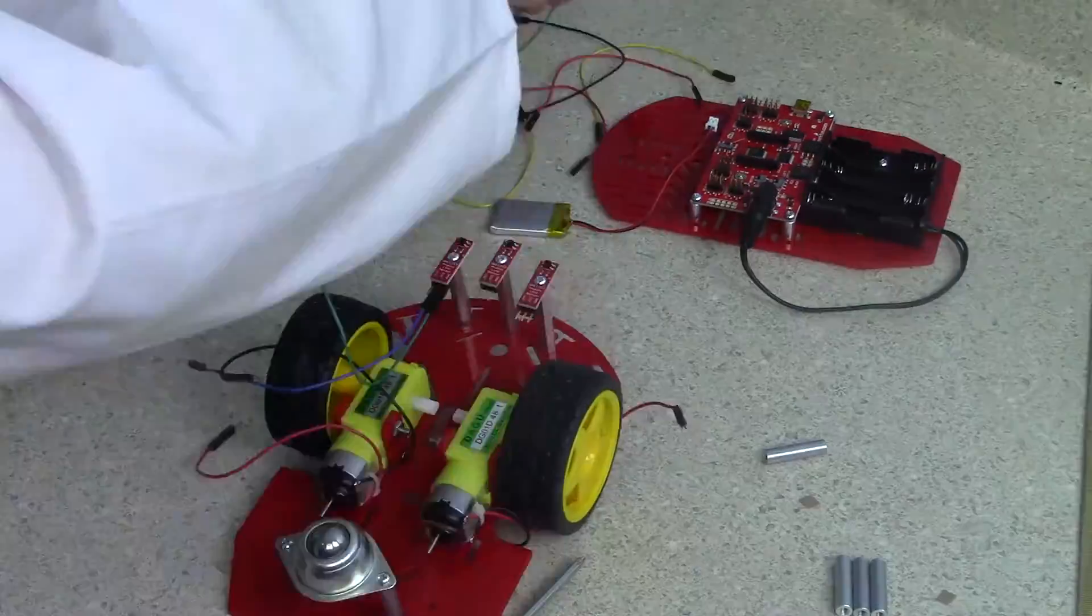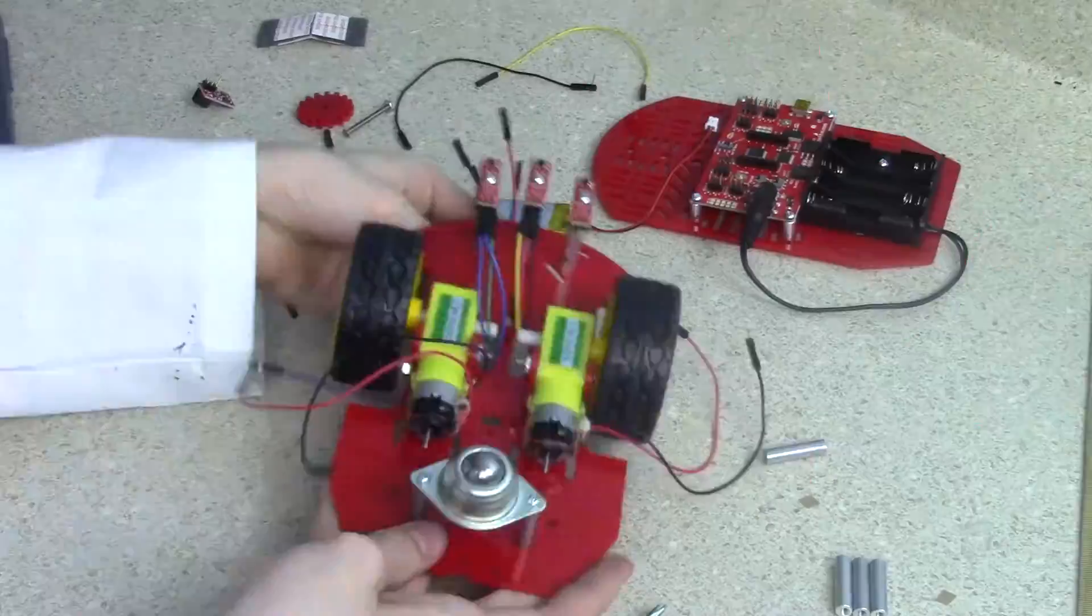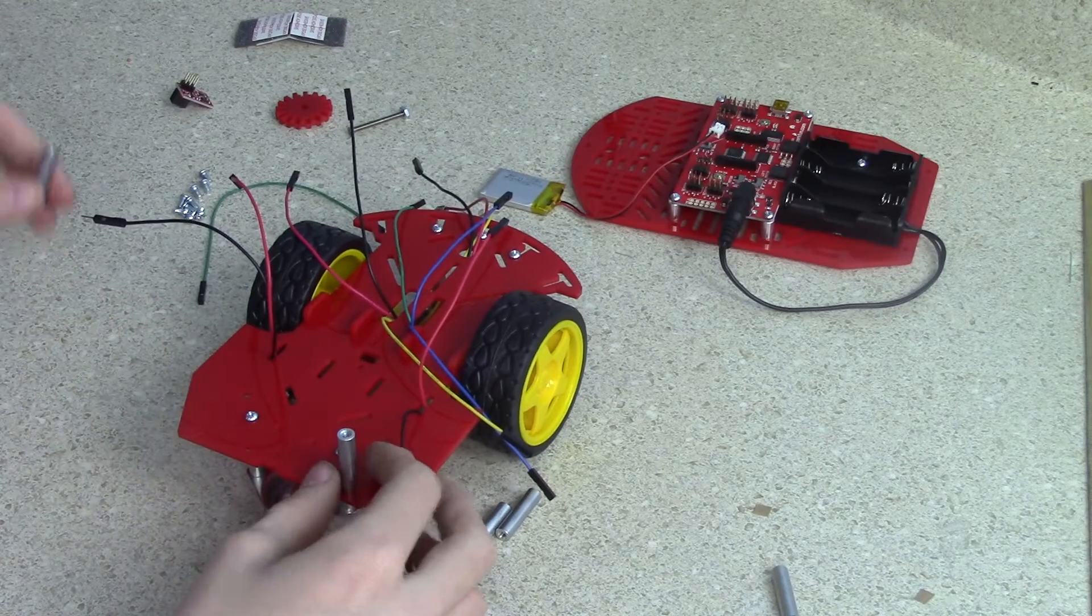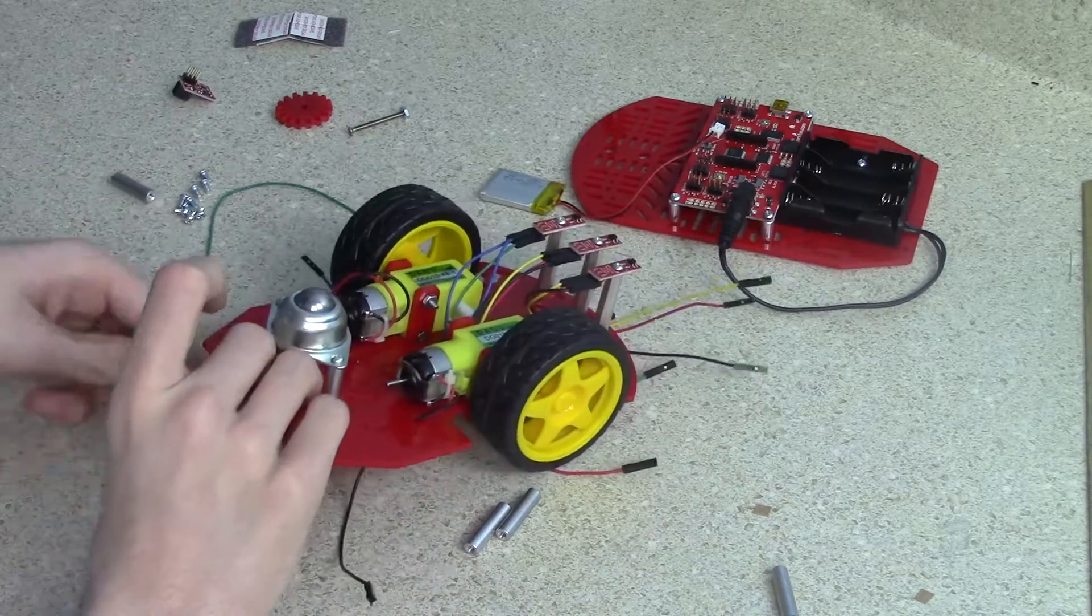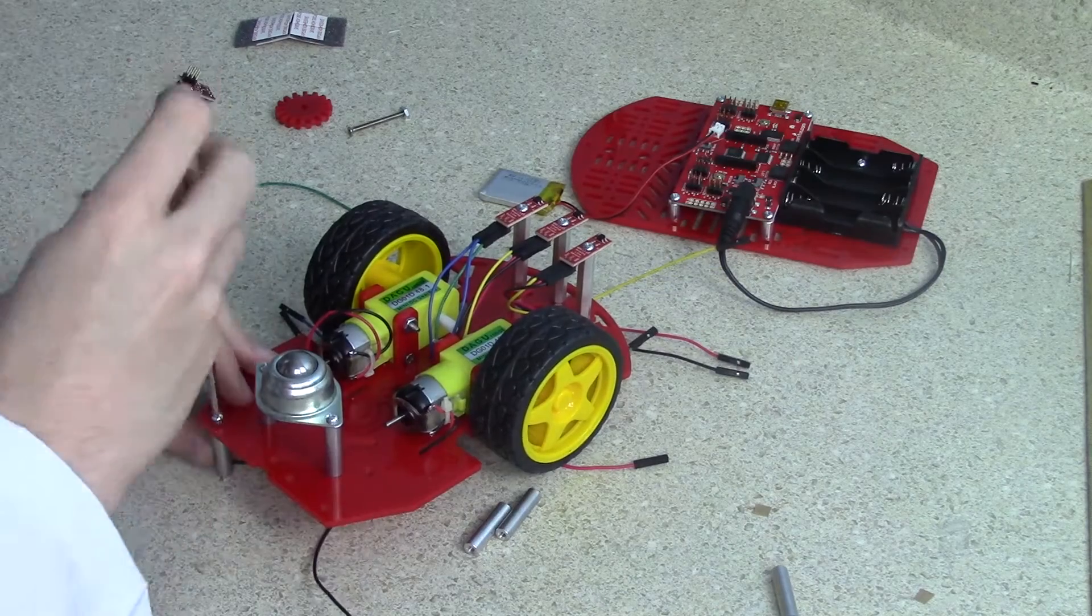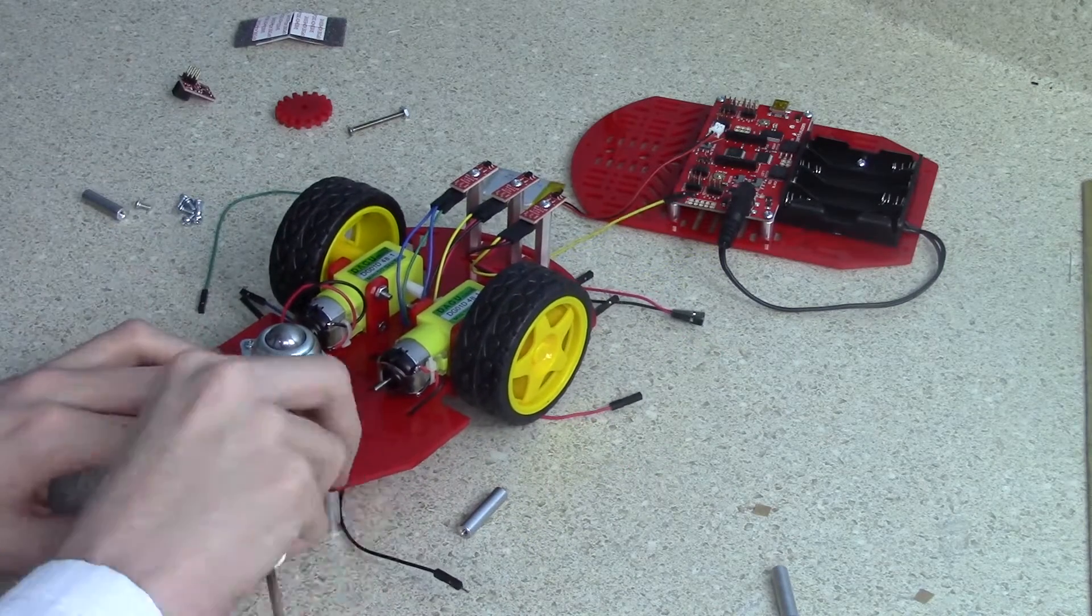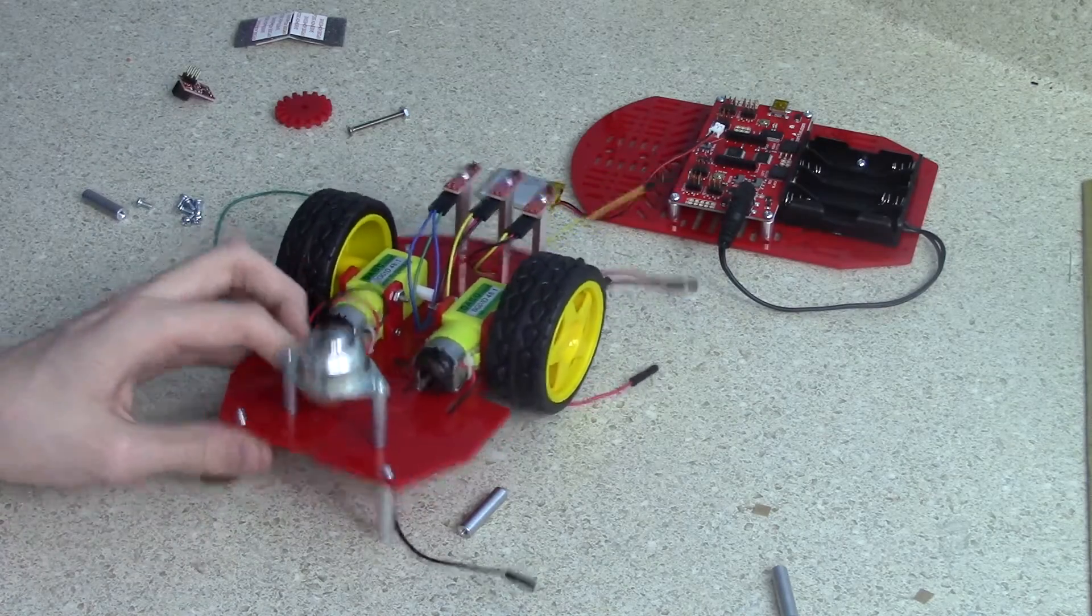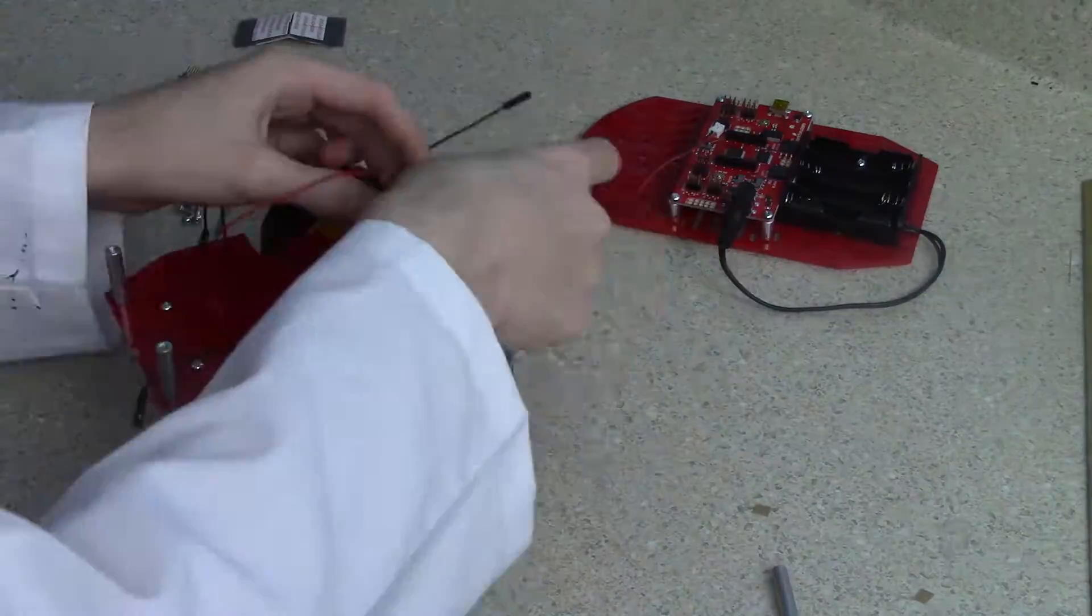Then wire everything up and feed the wires through the board. Finally add standoff screws to the corners of the board as shown. After you've done that line the top of the board up with the bottom and screw it into place.